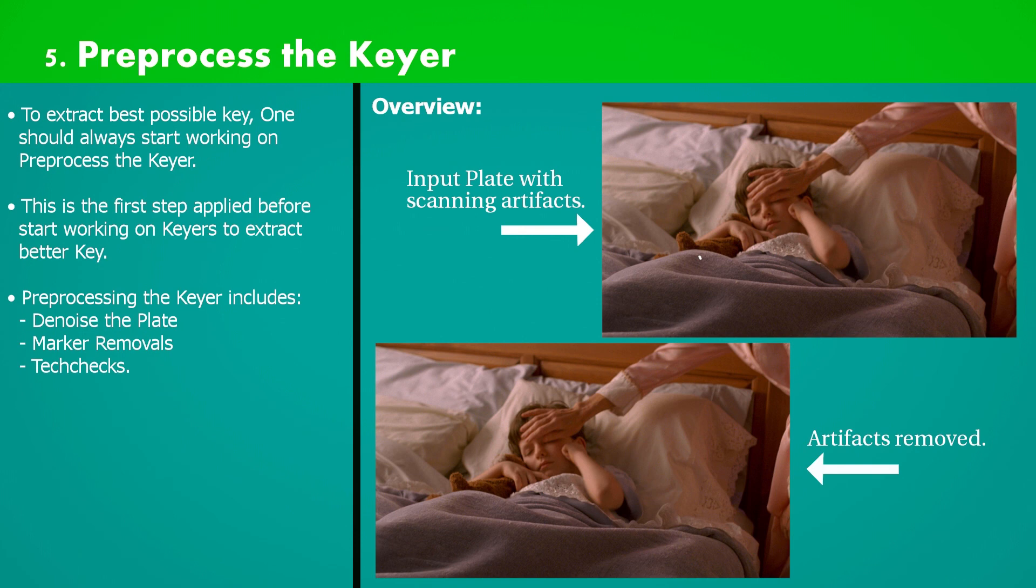As in the example image we can see the flicker dot on blanket sheet, and we need to remove it. Removing tech checks is a very easy and fast forward process. The only thing we need to do is apply a single clone brush stroke and that's it.